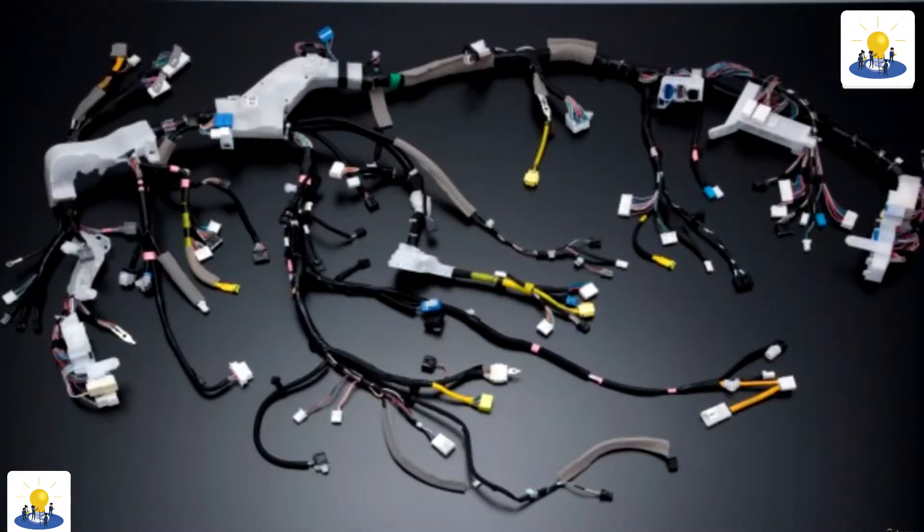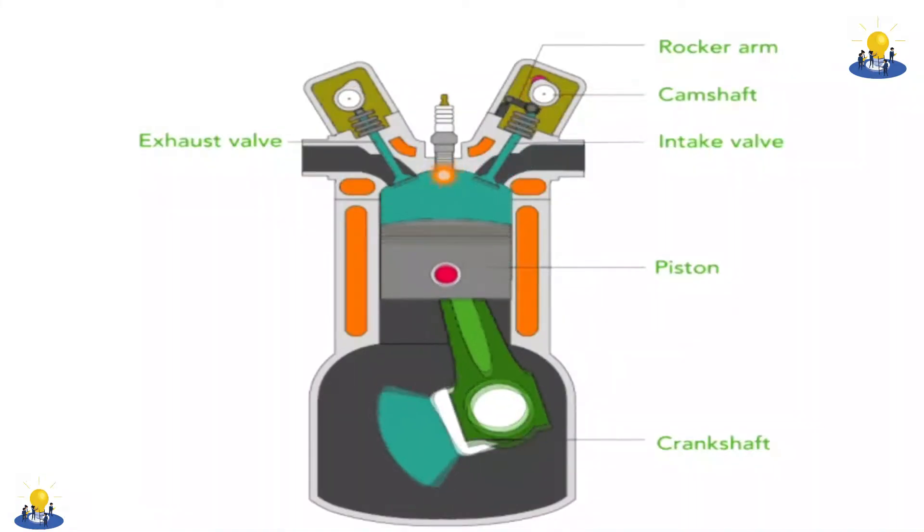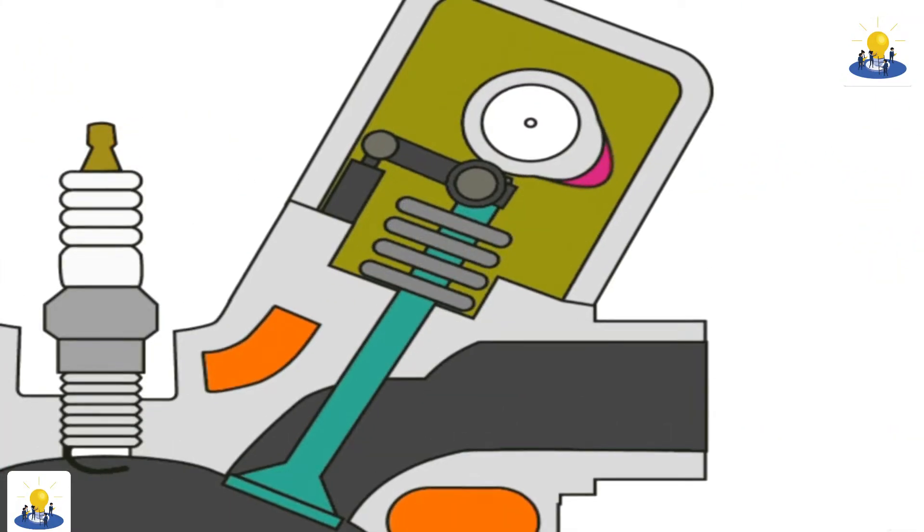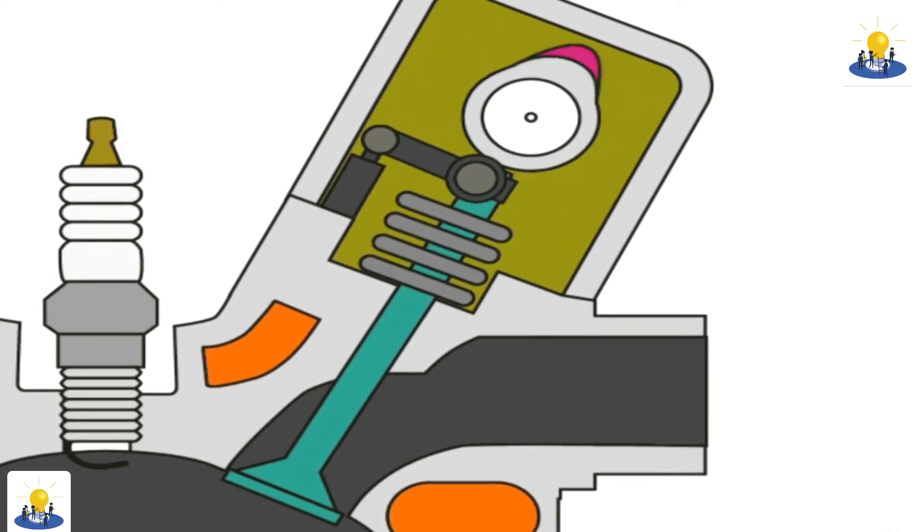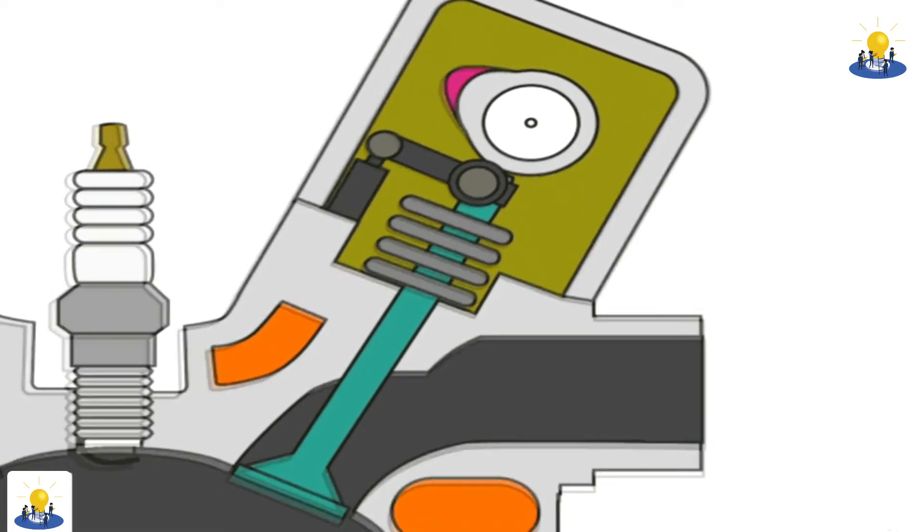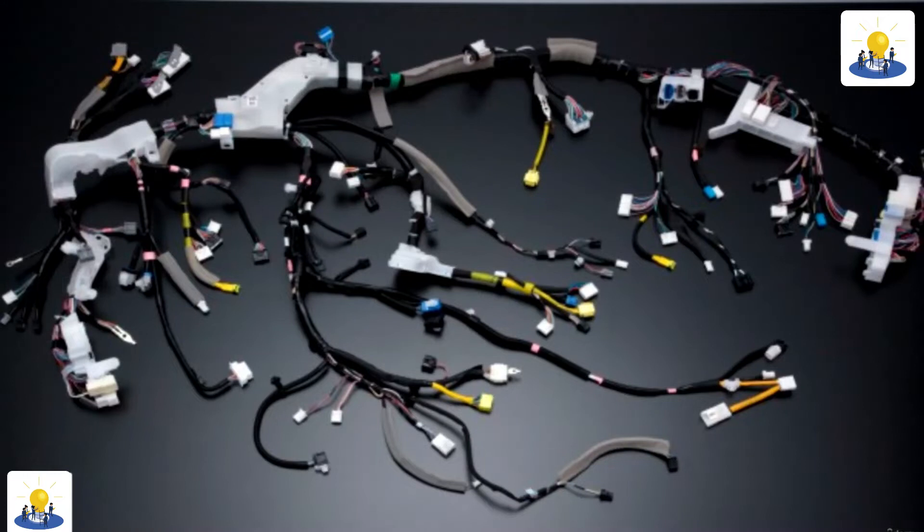The electrical system includes several subsystems that provide your vehicle with the vital spark that makes it start, keeps it running, and powers all electrical devices. It's one of the many systems on the vehicle that's monitored and controlled by the ECU.